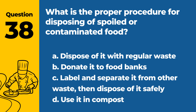Question 38. What is the proper procedure for disposing of spoiled or contaminated food? A. Dispose of it with regular waste. B. Donate it to food banks. C. Label and separate it from other waste, then dispose of it safely. D. Use it in compost. Answer: C. Label and separate it from other waste, then dispose of it safely. Spoiled or contaminated food should be labeled and separated from other waste, and disposed of safely to prevent cross-contamination.